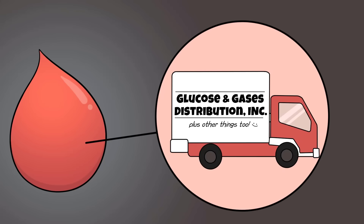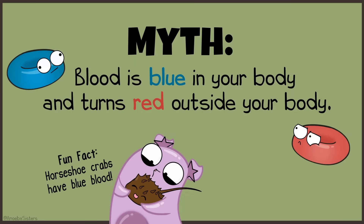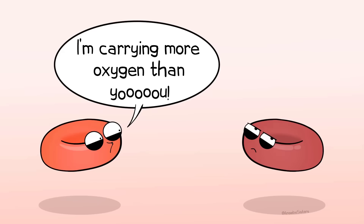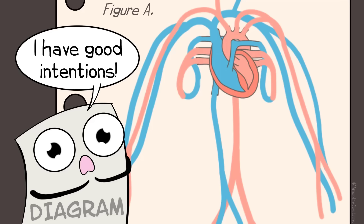We're going to first talk about blood — the medium of how we transport glucose and gases. As we mentioned in our body systems intro video, there are some misconceptions. Human blood is red, and always red, although the shade of red can vary based on how much oxygen is in the blood. Veins and arteries are often drawn in diagrams as blue or red to show whether they have lower or higher concentrations of oxygen, but that's just how it is used in most diagrams.